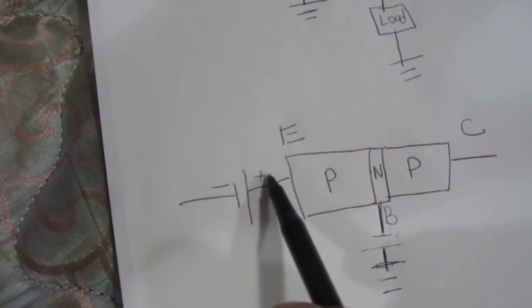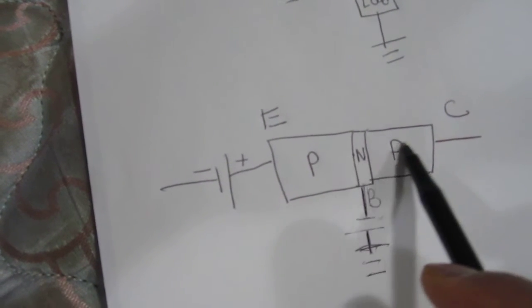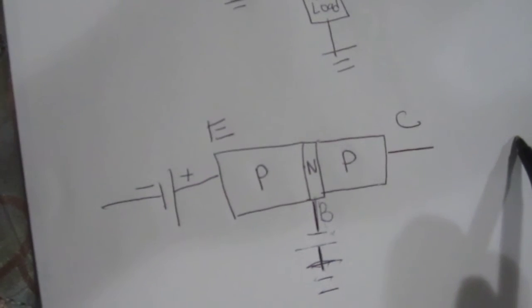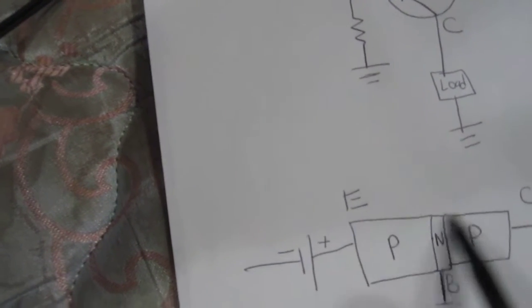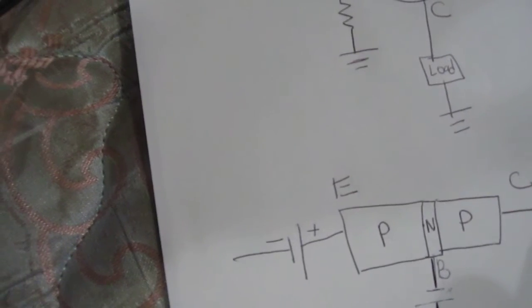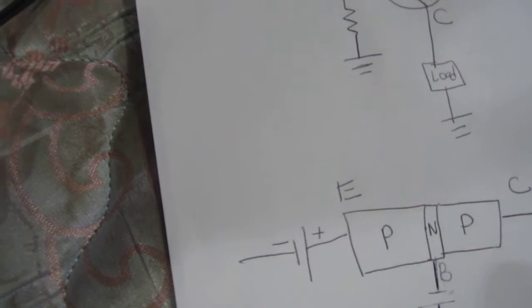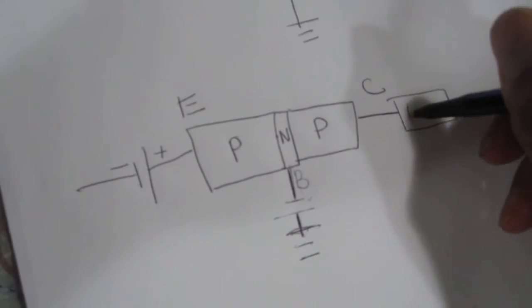You have holes then that are able to flow through from the emitter to the collector, and this is how you have the load then powered at the output.